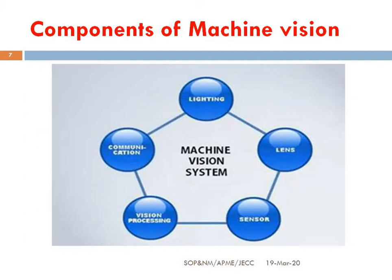The different components of a machine vision system are: lighting, lens, sensor, vision processing, and communication — these are the five components used in a machine vision system. For the lens, we use telecentric and micro lenses. For sensors, we use optic and magnetic types, along with machine processing and communication processing units.